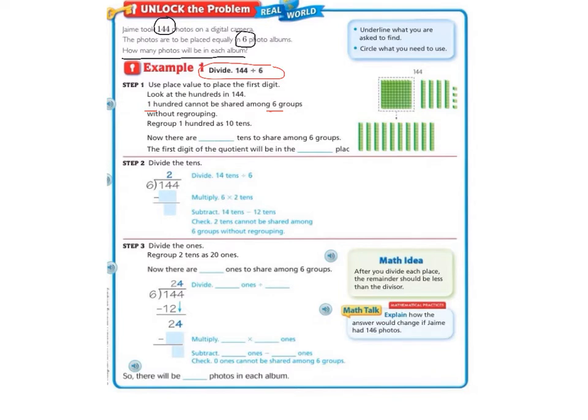So if I look at my tens place, if I look at the first two numbers, the first two numbers are 14. So now instead of looking at one group of hundreds, I'm going to look at 14 groups of tens, because six can go into 14. So we know that since it can't go into the hundreds, it's going to go into the tens place.